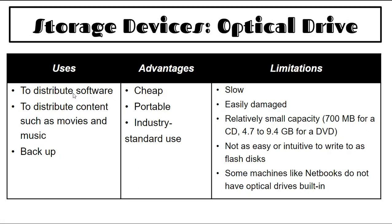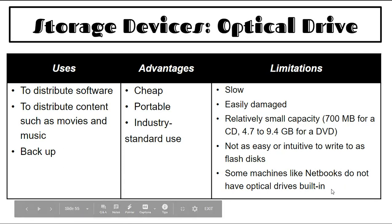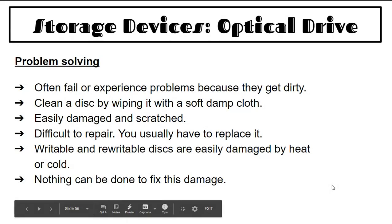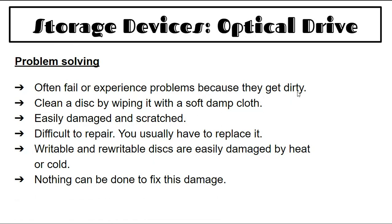Flash drive disadvantages: easy to lose, more expensive per gigabyte than hard drives, lower capacity than newer hard drives, limited lifespan — data can only be saved a certain number of times. Optical drives (DVD, CD, Blu-ray): used to distribute software, movies, and music, and to backup data. They're very cheap, portable, and industry standard. Disadvantages: very slow, easy to damage — one scratch can stop it working, not large storage capacity (700 MB for CD, 4.7–9.4 GB for DVD). Most computers now are not sold with optical drives.